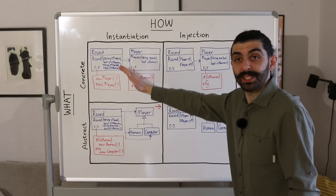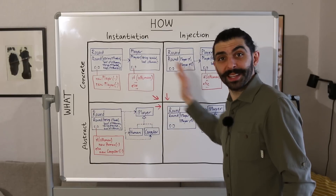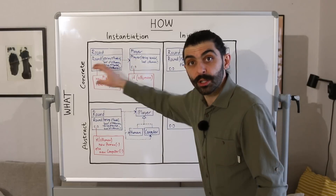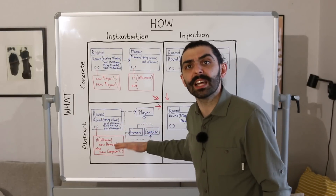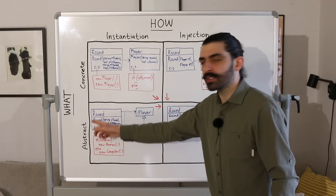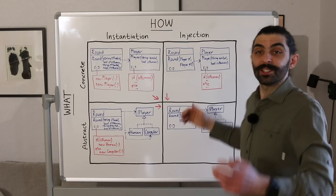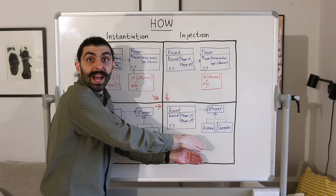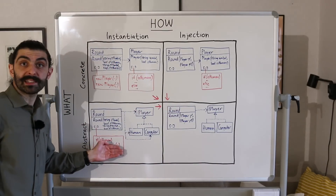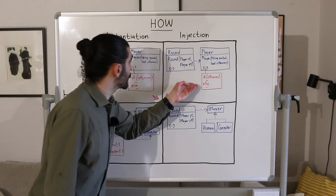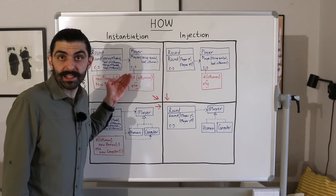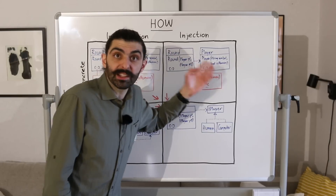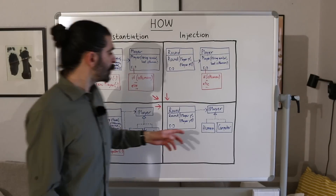So when we move from the top left to the top right — from instantiation to injection — we got rid of the duplicated constructor parameters. But we didn't get rid of the conditionals. And when we move from the top left to the bottom left — from concretion to abstraction — we got rid of the conditional, but only at this level; we could only push it one level up because we are still duplicating constructor parameters. This is why we should not stop in the top right or in the bottom left. We should combine both ideas and move towards the bottom right — not just program to interfaces, and not just use dependency injection, but do both and get the best of both worlds.